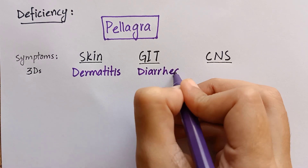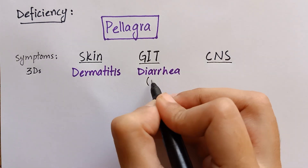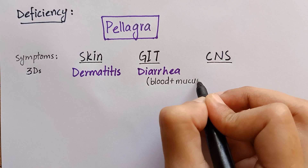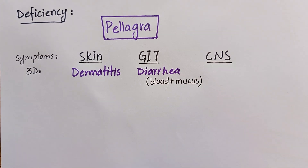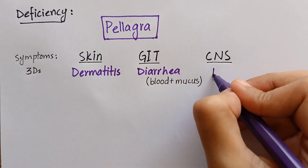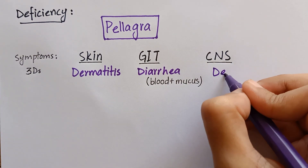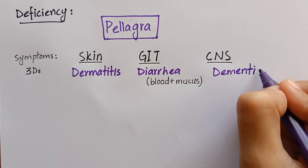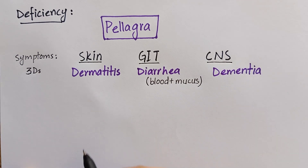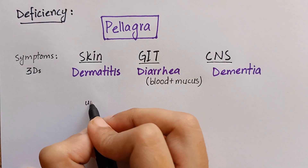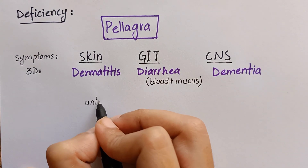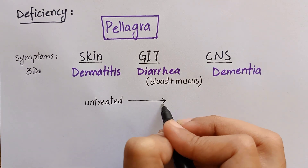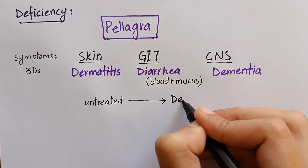The second D is diarrhea, in the form of loose stools, often with blood and mucus. The third D is dementia, which is associated with degeneration of nervous tissue. If this condition stays untreated, it may lead to death.